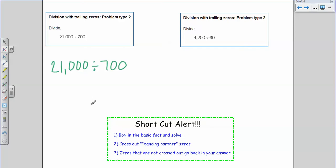I'm going to box in my basic fact. So let's do that. My basic fact here is going to be 21 divided by 7. 21 divided by 7 is 3.